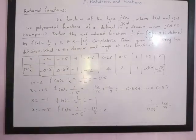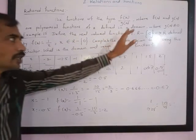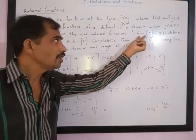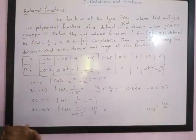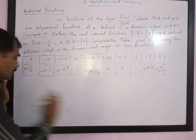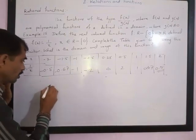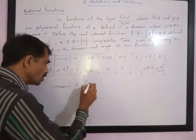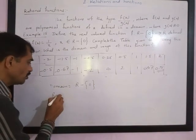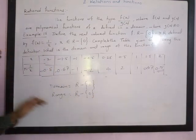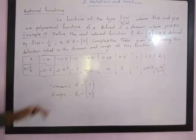What is the domain and range of this function? We are already told it is defined as a real valued function with all real values that can be defined, that is all real values other than 0. So the domain equals all real numbers other than 0. The range will also have all values of real numbers but not 0 — so other than 0, all real numbers are included in both the domain and the range.